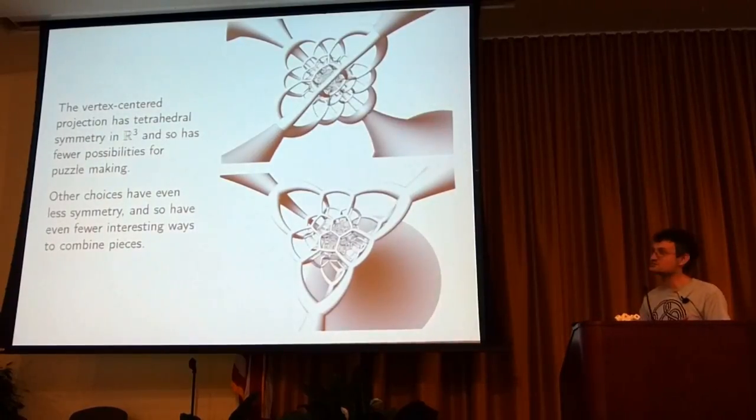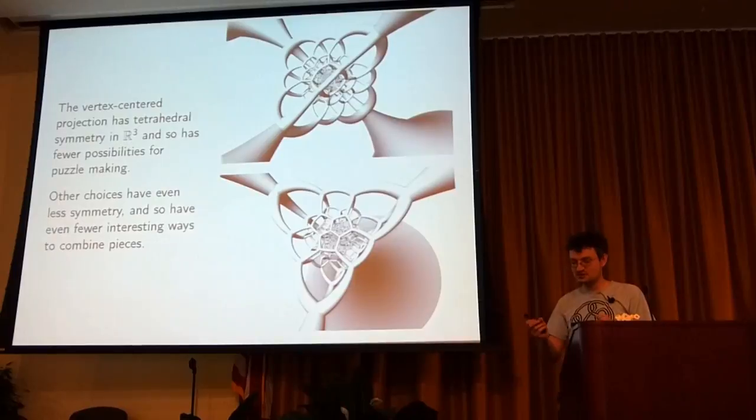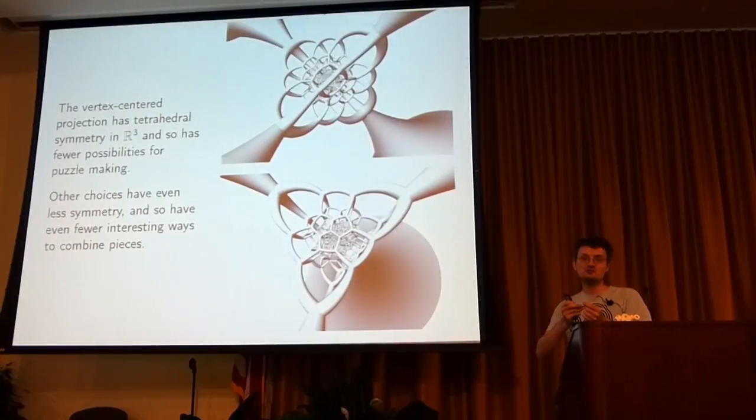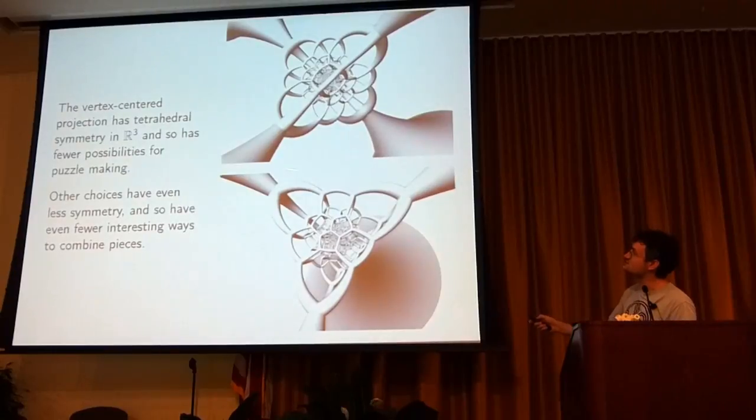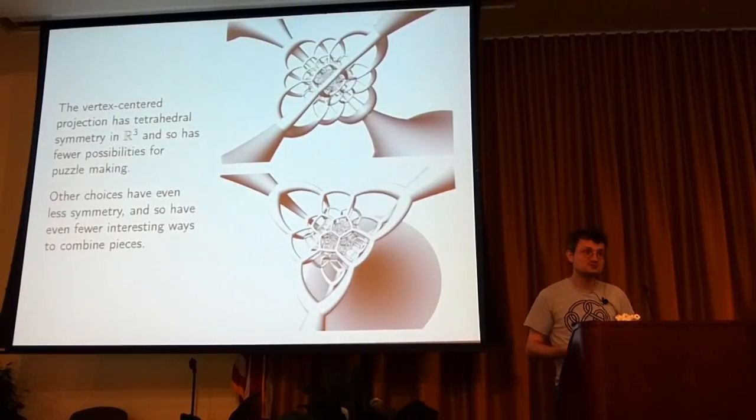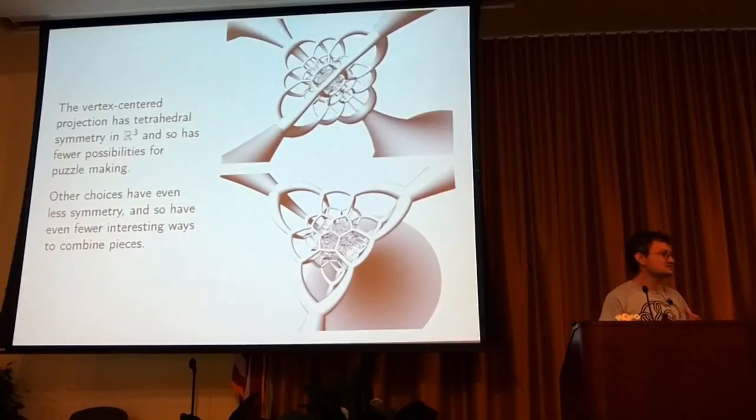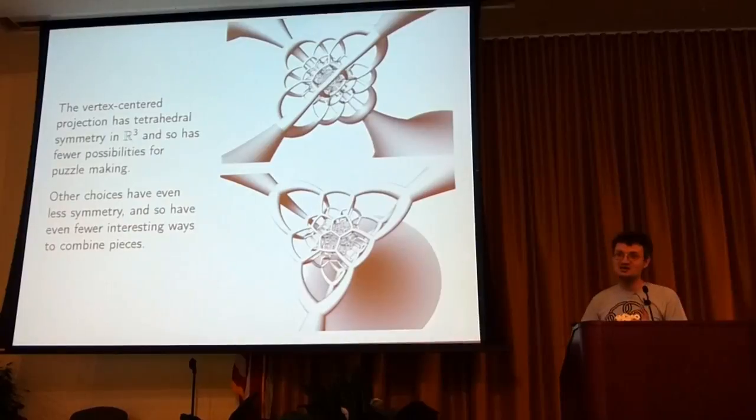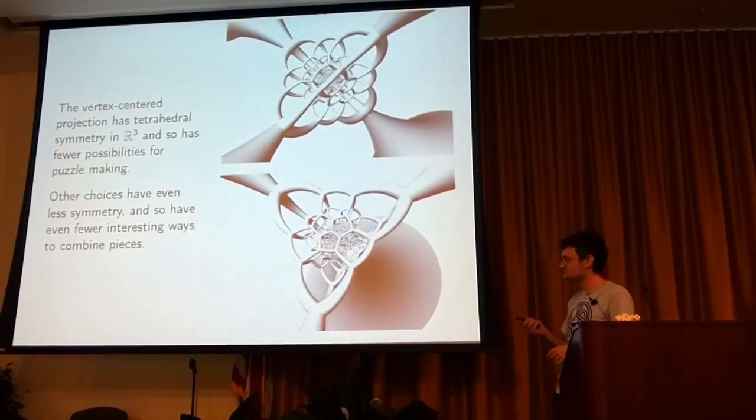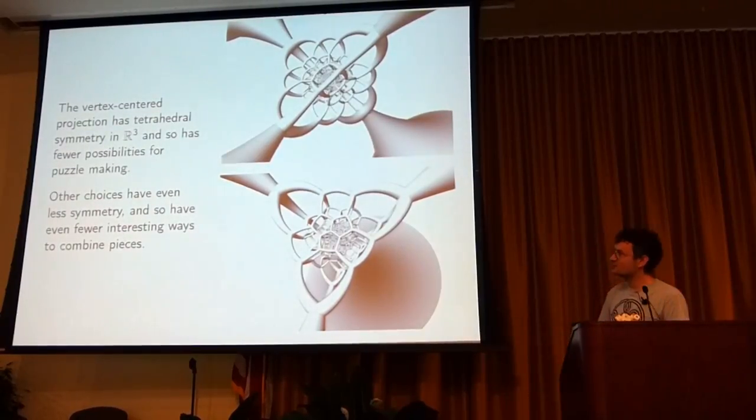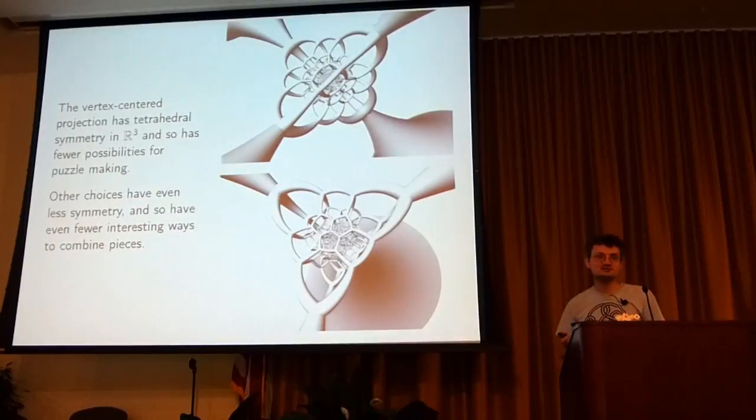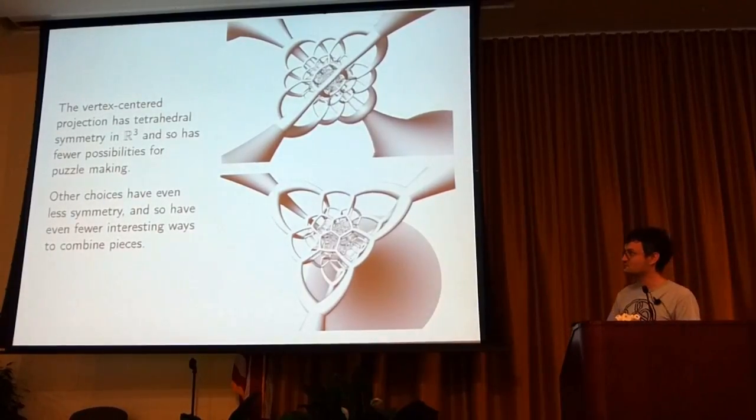Here's an alternative thing you could do. You could start with the 120-cell with the north pole at a vertex, and then you go forward, and again, these edges go out to infinity, and what you end up with perhaps has tetrahedral symmetry, which has less symmetry, so there's less sort of combinations and ways in which pieces can be combined together, and less possibilities to make puzzles. There are other sort of reasonable things you might do as well, other ways to project, and they have even less symmetry, and so less possibility for puzzles.